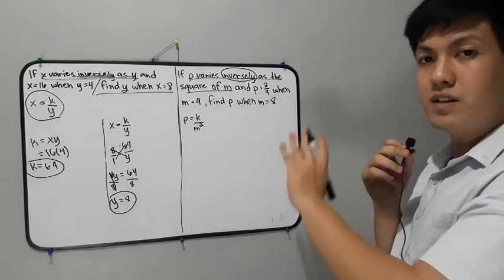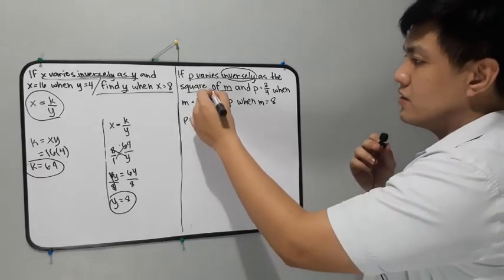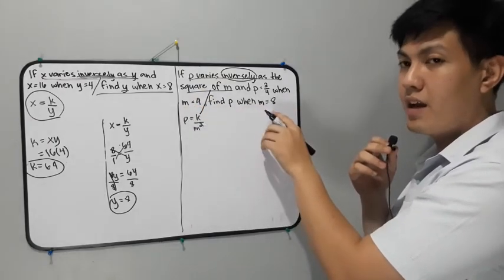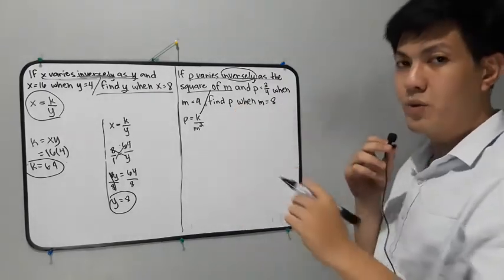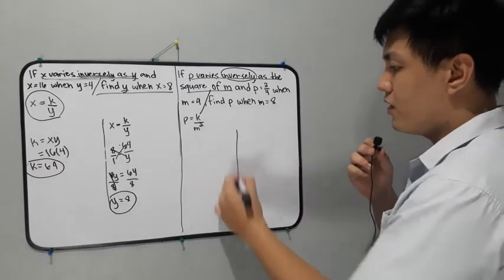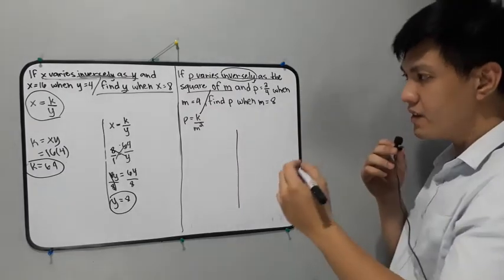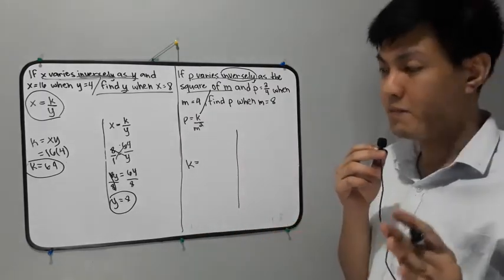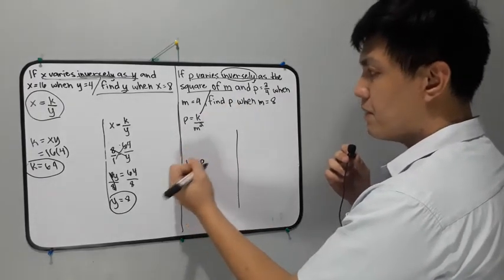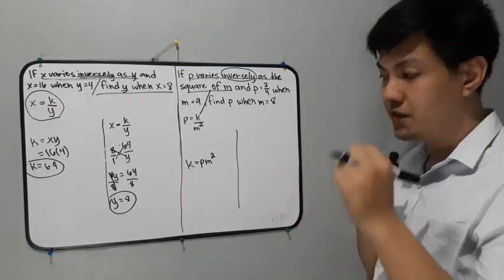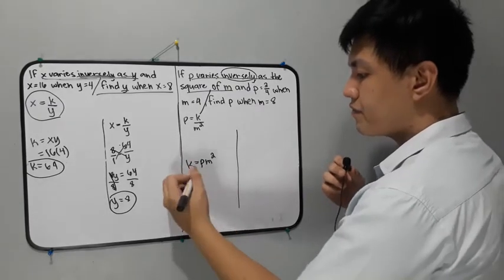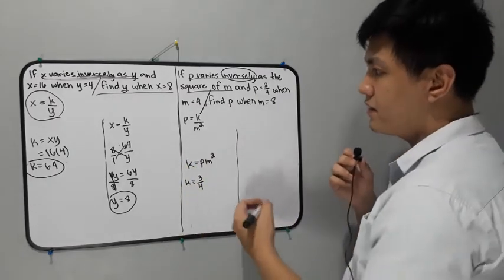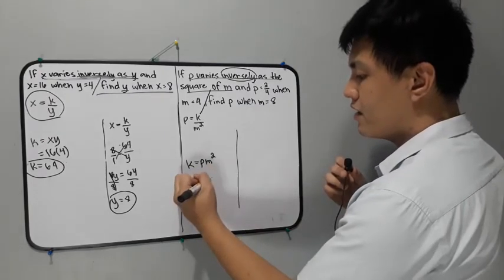We separate or divide the whole given into two parts. The first part goes up through 'M is equal to 4,' and the second part is 'find P when M is equal to 8.' We solve for the constant using the first part. For inverse variation, we multiply to find the constant, so k is equal to P times M squared. The value of P is 3/4 and M is equal to 4, so it becomes 4 squared.